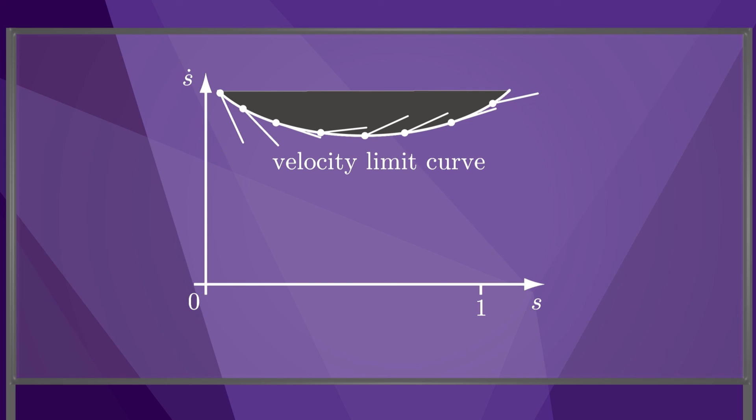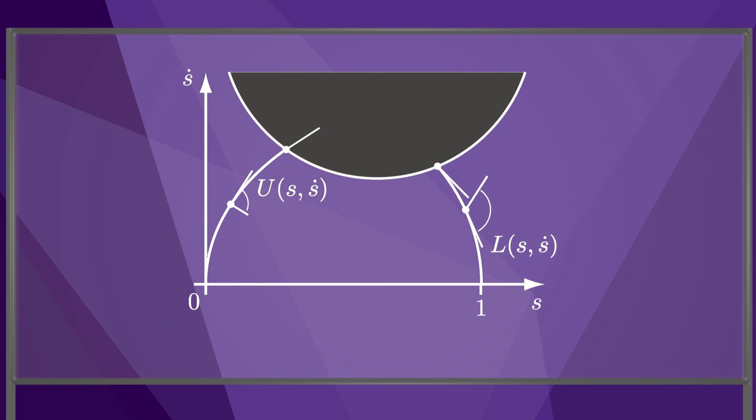Now, considering the existence of a speed limit, we might end up with a situation as illustrated here. The maximum acceleration curve and the maximum deceleration curve do not intersect, but instead run into the velocity limit curve. Therefore, bang-bang control is not possible. What to do in this case is the subject of the next and final video of Chapter 9.